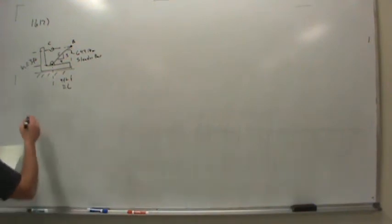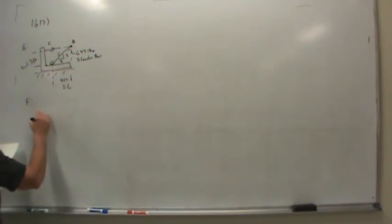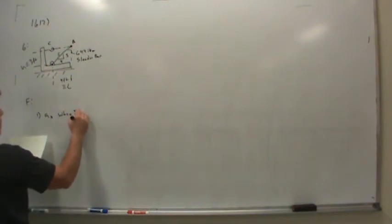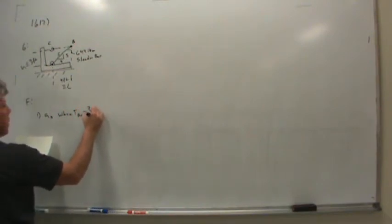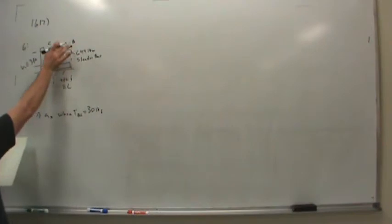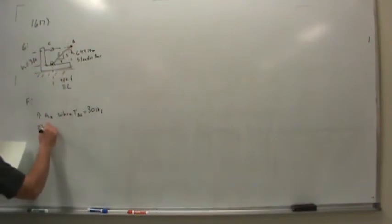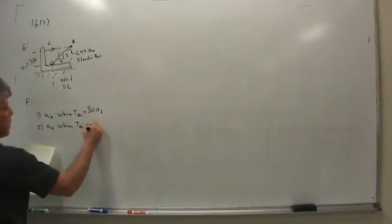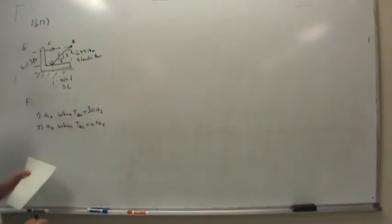All right, so we want to find one, acceleration in the X direction when TBC equals 30 pounds force, when there's 30 pounds of tension in that cable, and two, the acceleration when TBC is 0 pounds force. That's what we want to find.